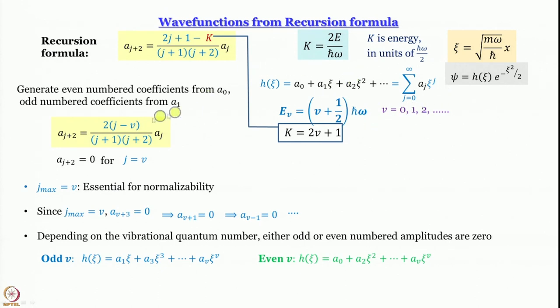And then what we have done is we have written this recursion formula a_j+2 in terms of a_j, and there we have put in j minus v. Hence we have proved that j_max is equal to v. You cannot have a j value - what is j value? j is the number of terms in the summation for H of xi. In the most general form it is an infinite sum, so what we are saying is actually it is a finite sum. You do not need to go beyond the vth term.